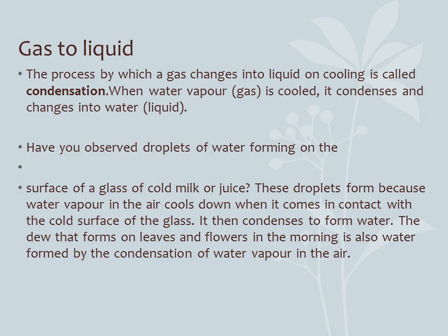The water vapor condenses and converts into water — that is why water droplets are present on the outside of the glass. Similarly, if you look in the morning during the spring or cold season, you can see water droplets on leaves and flowers. During the cold season, water vapor slowly condenses and forms water, which is why you see water droplets on leaves and flowers in the morning.